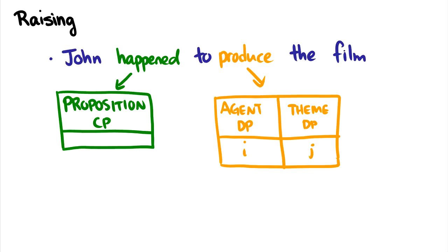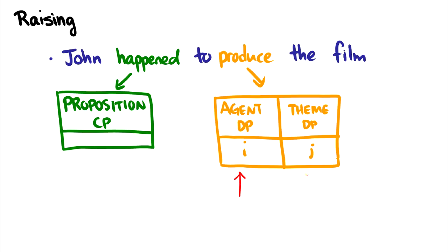So: John happened to produce the film. Let's take a look at the verb 'produce' first. What do we know about the theta grid for 'produce'? It takes an agent and it takes a theme — someone produces something.